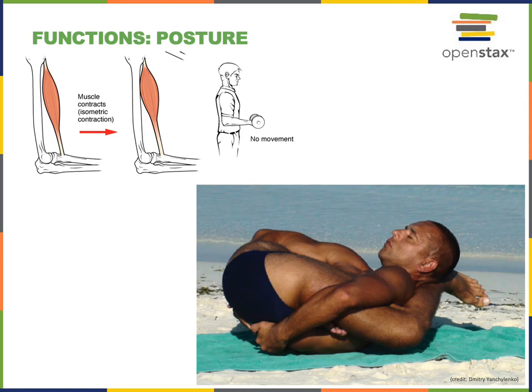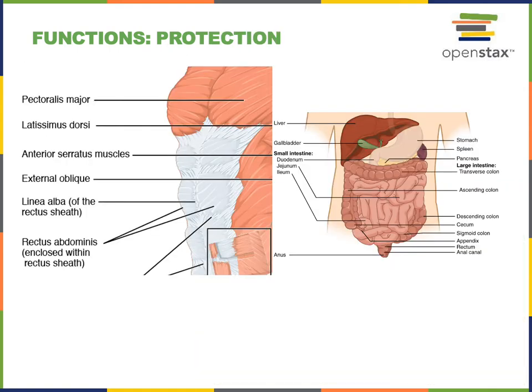Muscles stabilize joints by producing muscle tone with continuous contractions in order to prevent movement. Protection is another major function of the muscular system. For example, the skeletal muscles of the abdominal wall such as the rectus abdominis, external abdominal oblique, and internal abdominal oblique help to protect visceral organs located deep within the abdominal cavity.